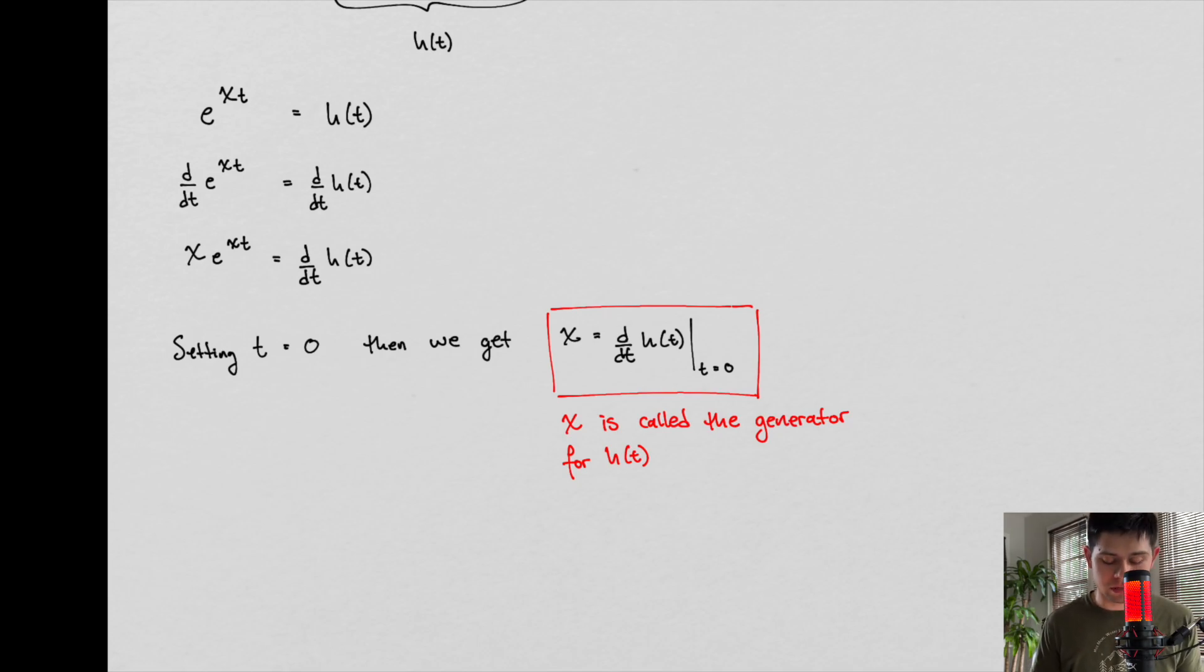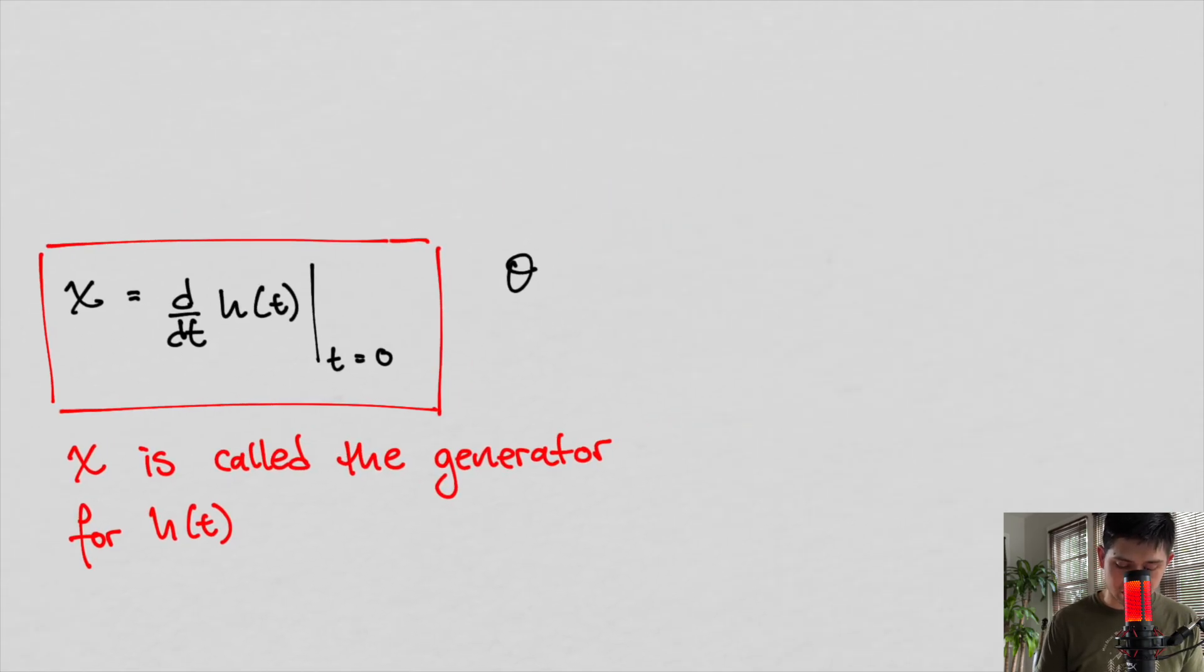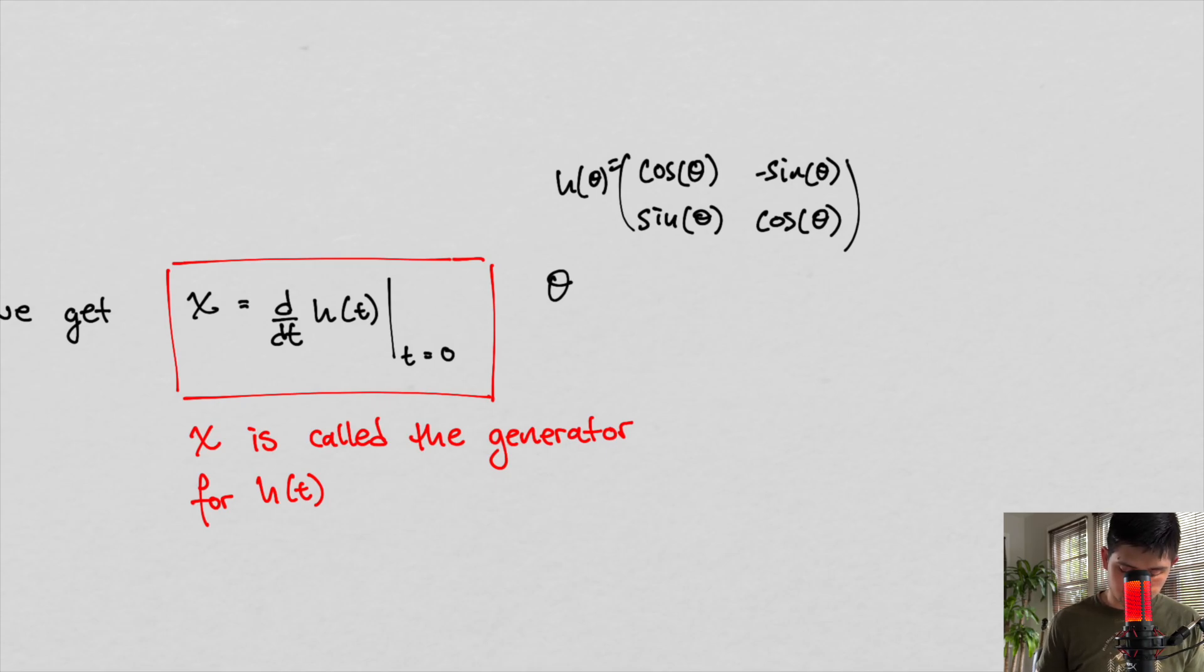So the actual definition that we're going to go with here is that the generator is the derivative of our rotation matrix at our parameter equals zero. T can be labeled T, it can be labeled phi - typically we see phi as our parameter, because if phi was our parameter, then our rotation matrix is cosine of phi, minus sine of phi, sine of phi, cosine of phi. This would be our H of phi. That's our rotation matrix, specifically in our 2D case.